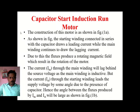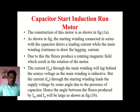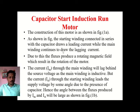As shown in the figure, the starting winding connected in series with the capacitor draws a leading current, while the main winding continues to draw a lagging current. The starting winding draws a leading current because it is the characteristic of a capacitor — when we connect a capacitor, the current leads the voltage. In the main winding we have inductors, and the characteristic of an inductor is a lagging current.